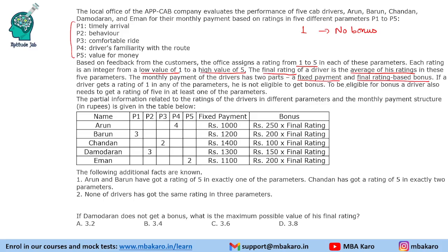It is also given that to be eligible for a bonus, a driver needs to get a rating of 5 in at least one of the parameters. If you do not get a 5, there is no bonus. So there are two criteria that restrict a driver from getting a bonus: he should not get a 1 in any parameter, and he should get a 5 in at least one parameter.